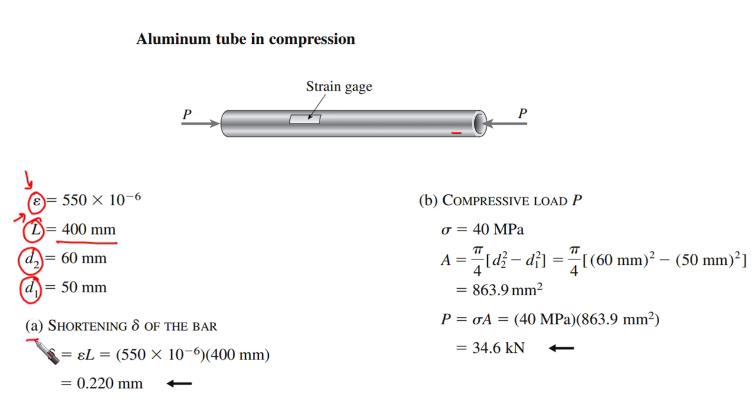We want the shortening δ after applying these forces of the bar. From this equation, as I mentioned before, shortening equals ε times L, the original length. We have ε with this value and we have the original length 400 millimeters, then we can obtain this shortening. It's going to be 0.22 millimeters.